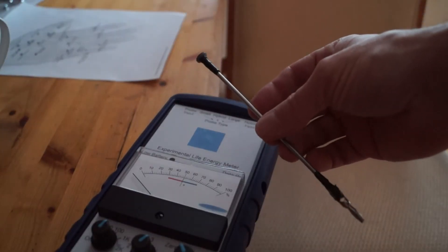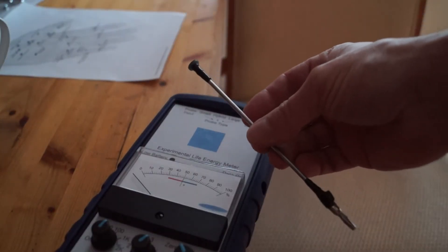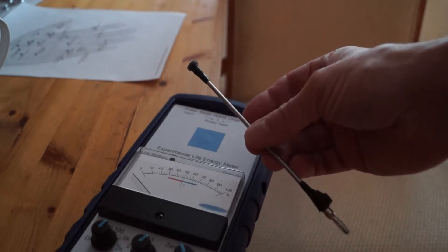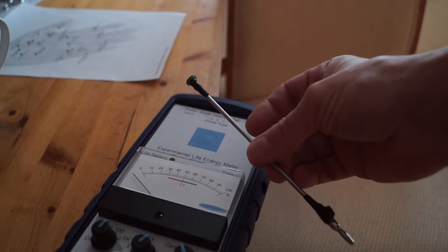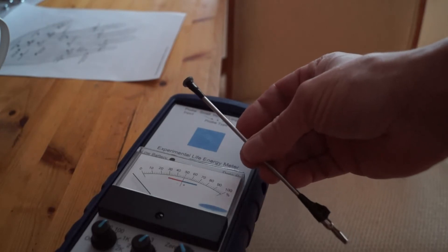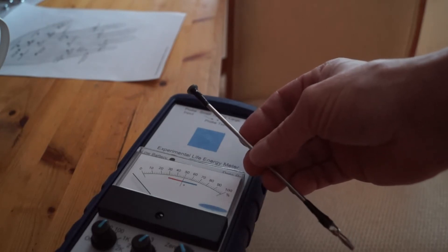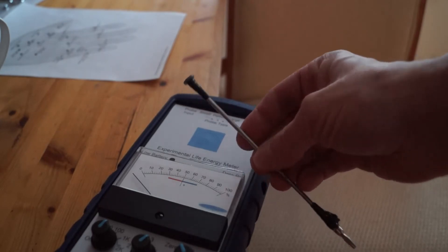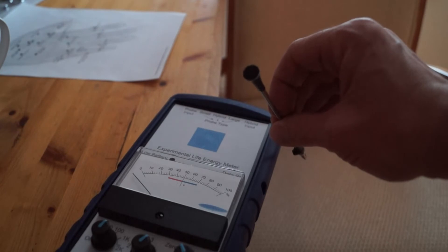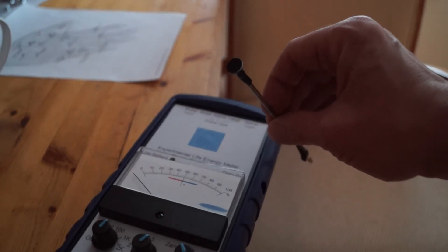The electrode that we're going to use today to measure the acupuncture points is a 15 cm long stainless steel rod that has a small 1 cm diameter plastic boot around the end that keeps the flesh flat when taking a measurement. There's a small insulating layer over the end to prevent direct contact of the stainless steel rod with the skin.